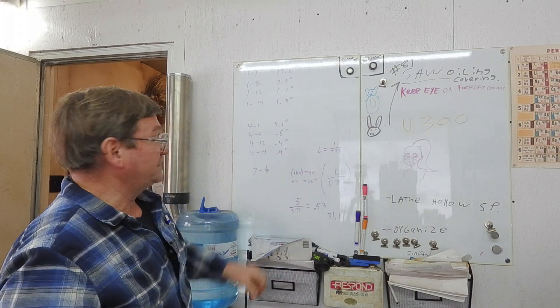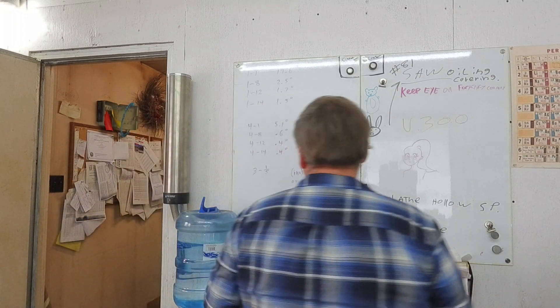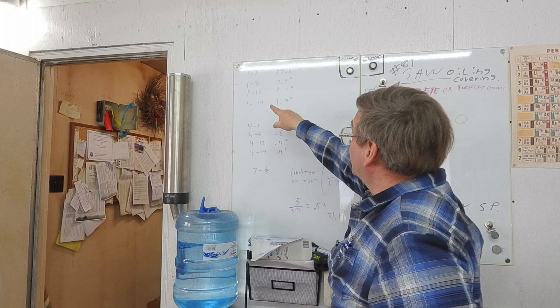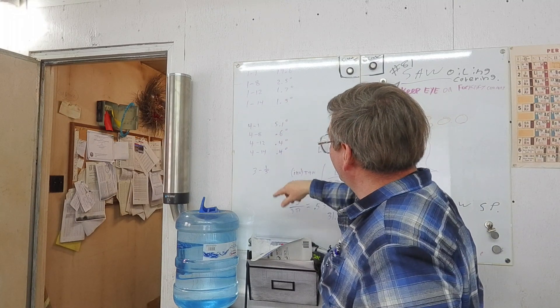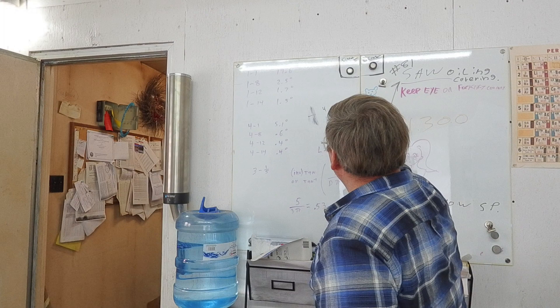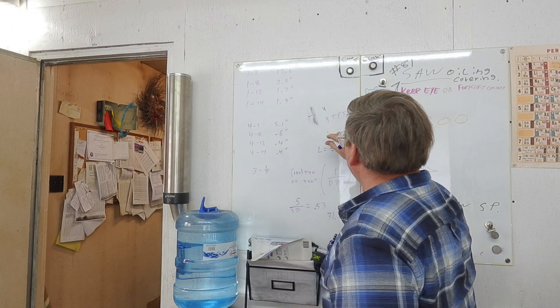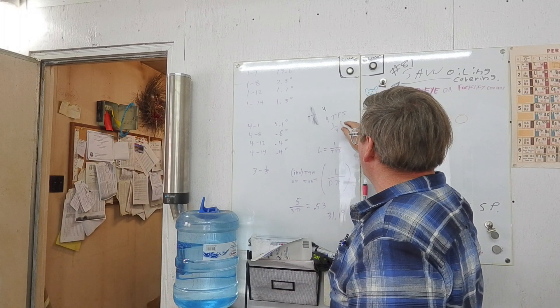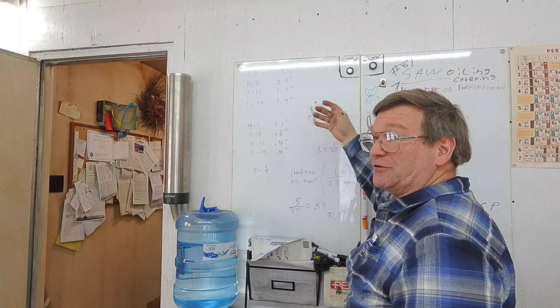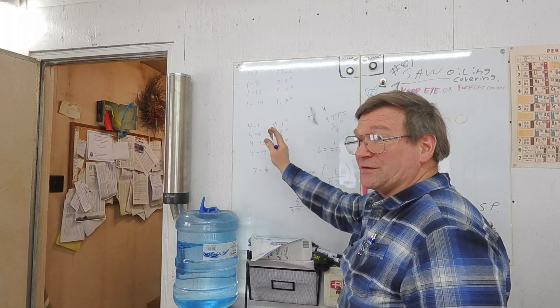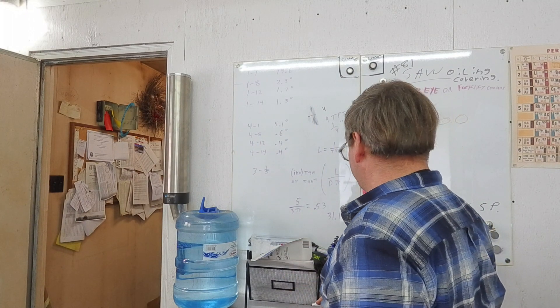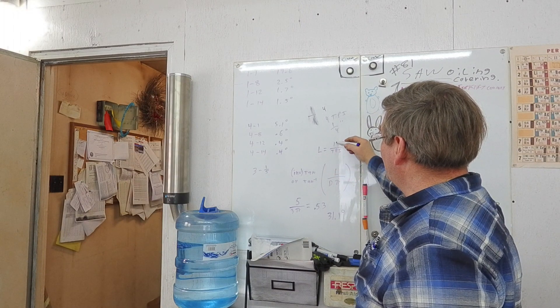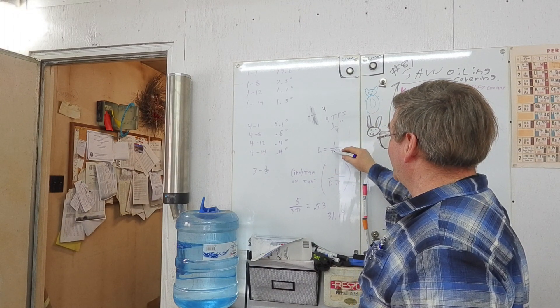So, if your thread pitch is one quarter, if it's four threads per inch, your lead, the amount it goes forward, is going to be one quarter of an inch. Every time you turn it around, it goes forward one thread distance, one quarter of an inch. So, your formula to get your lead is, lead equals one divided by your threads per inch.